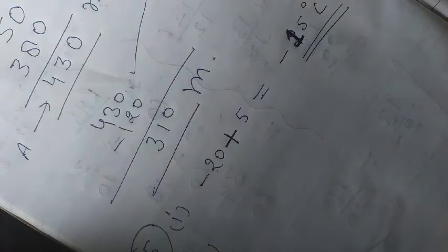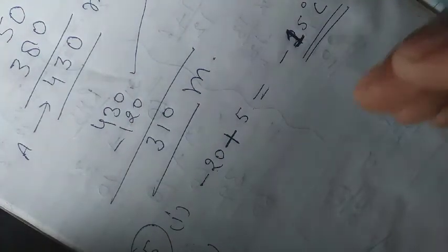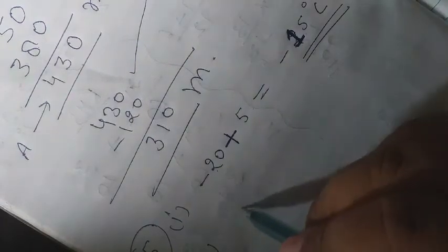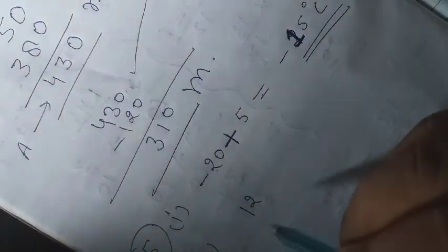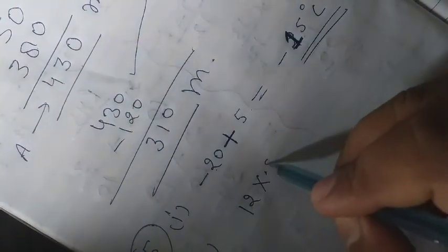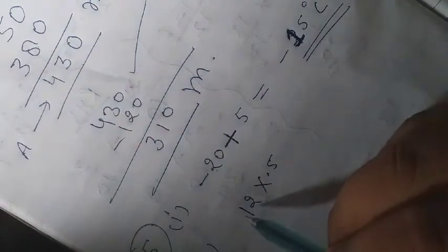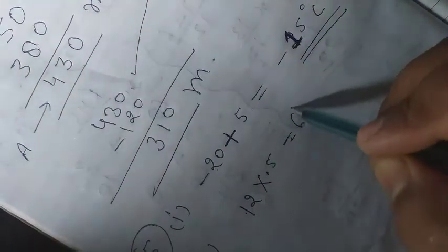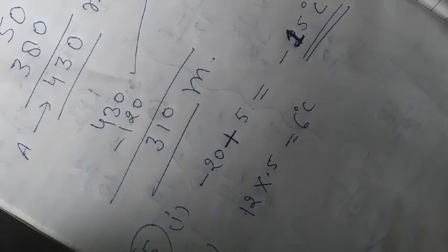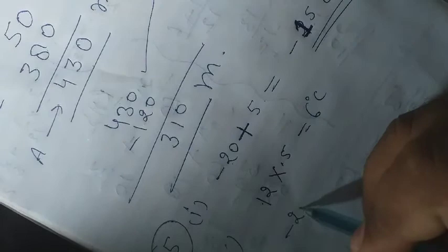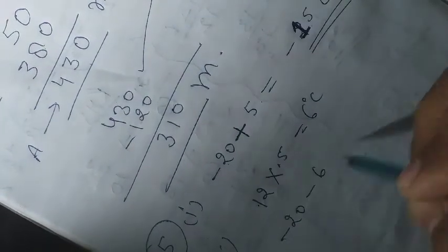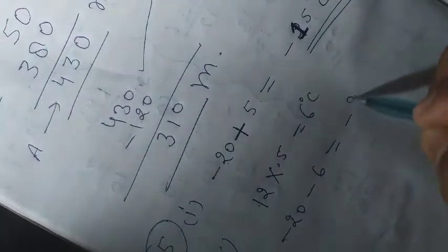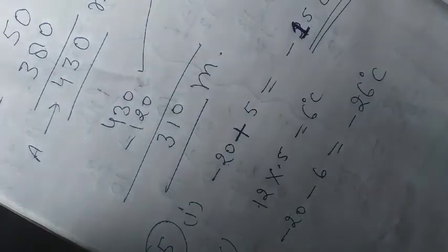If the temperature is lowering, 0.5 degrees every hour is checked, but in 12 hours, how much will it happen? So 12 by 6, 6 degrees Celsius it will be less. So minus 20 was first, minus 6, which is minus 26 degrees Celsius.